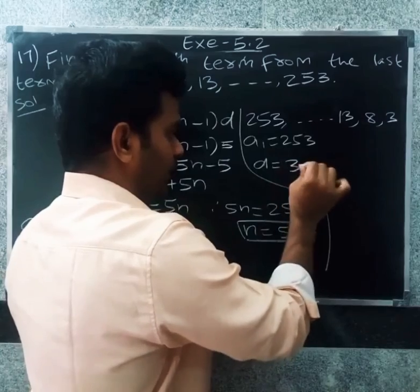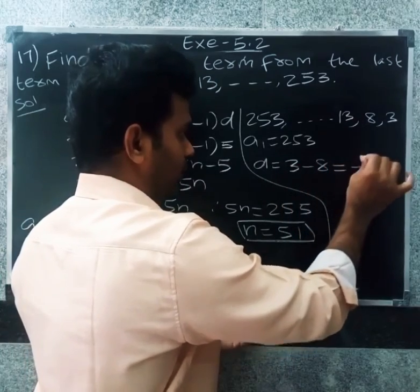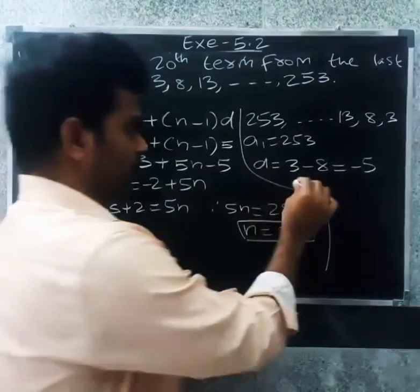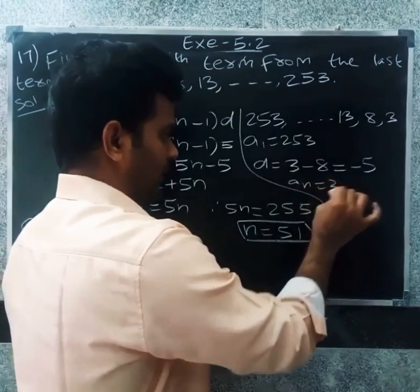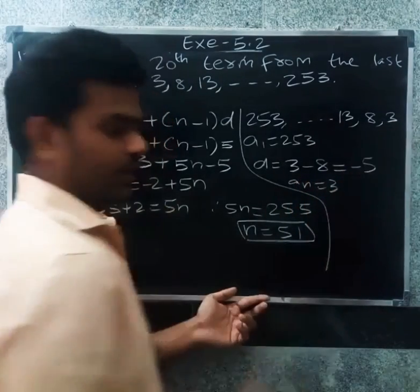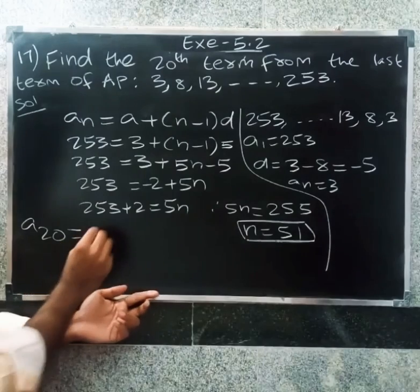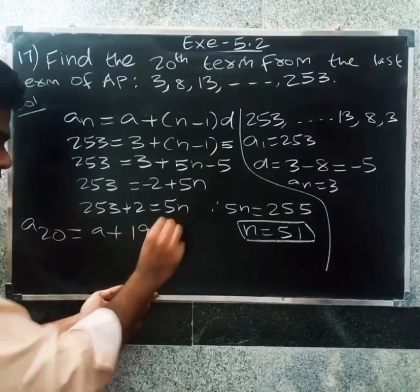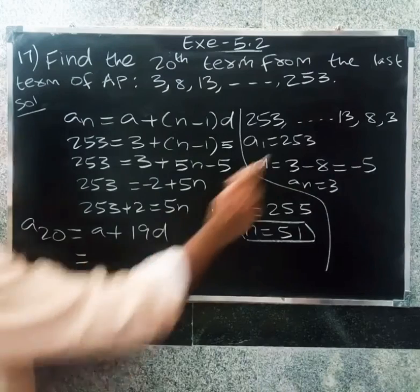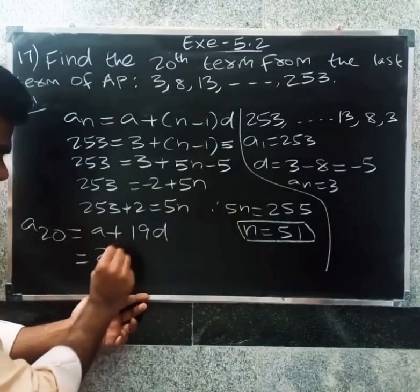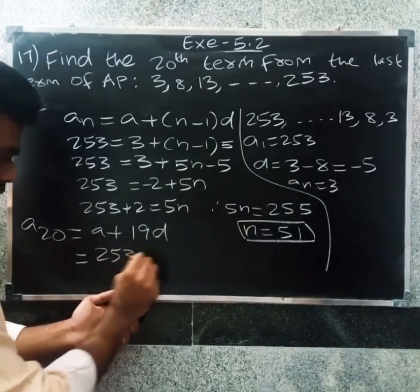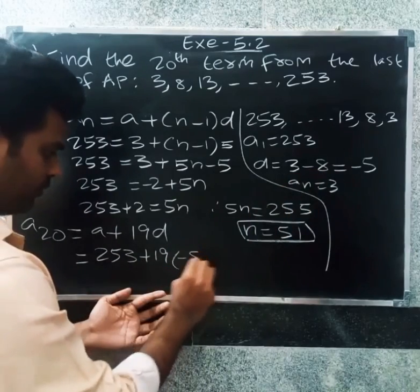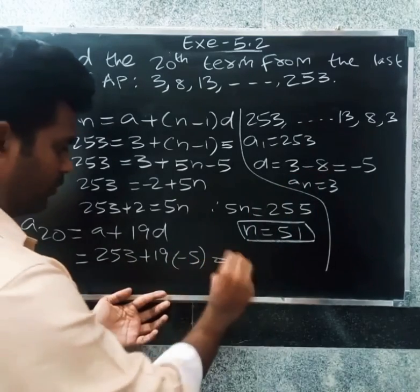So the difference from the end is 3 minus 8 equals minus 5. The last term a equals 253. So a20 from last equals a plus 19 times d, where a equals 253 and d equals minus 5. That gives 253 plus 19 times minus 5 equals 253 minus 95.